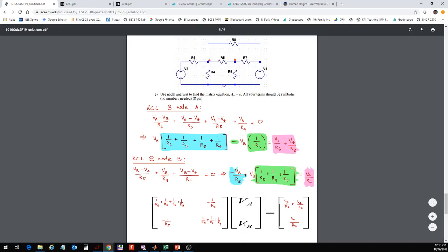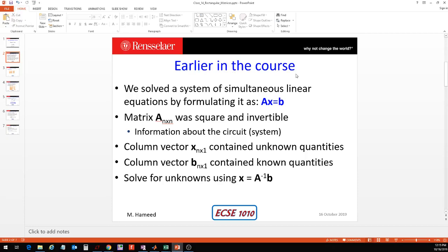My X vector contains the unknown quantities. We were after nodal voltage A and nodal voltage B, so my X vector was VA and VB. On the right-hand side, my column vector B is the known quantities, which are my source voltages V3 and V4, and some resistors related to those voltage sources. So A is the system or circuit, X is unknowns, equals B which is known. We tried to solve for X to find the unknown quantities VA and VB.